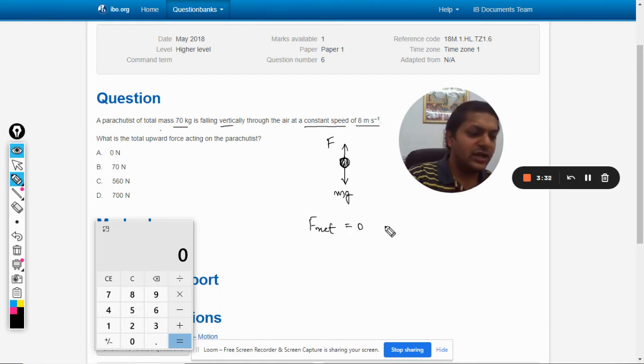Under that condition only it can travel at uniform velocity, at a constant speed. So F minus mg should be equal to zero. F is equal to mg, 70 kg into 10 meters per second squared is the gravity.